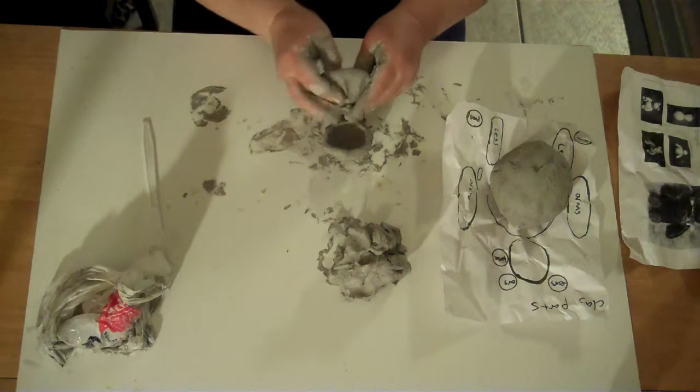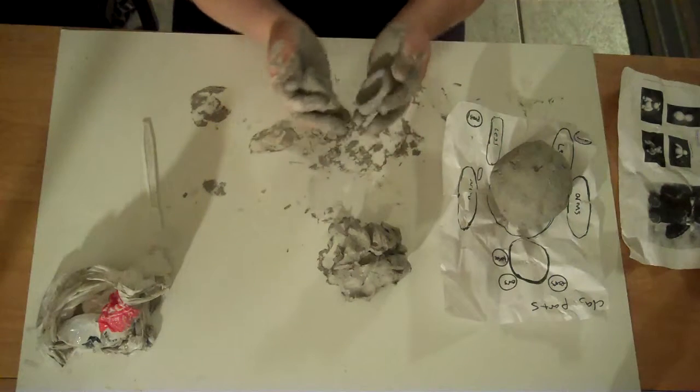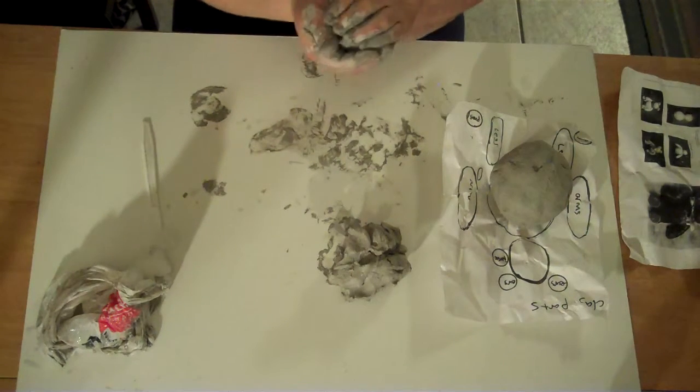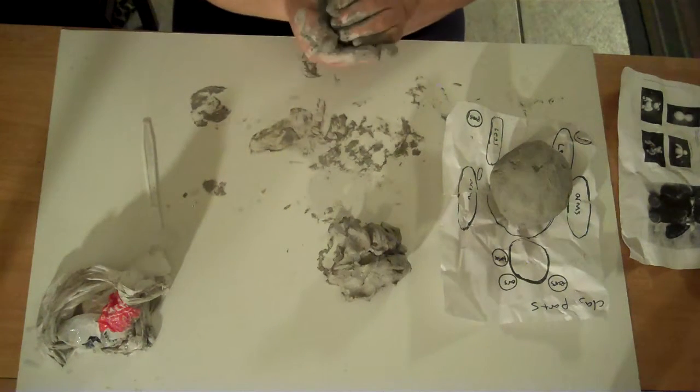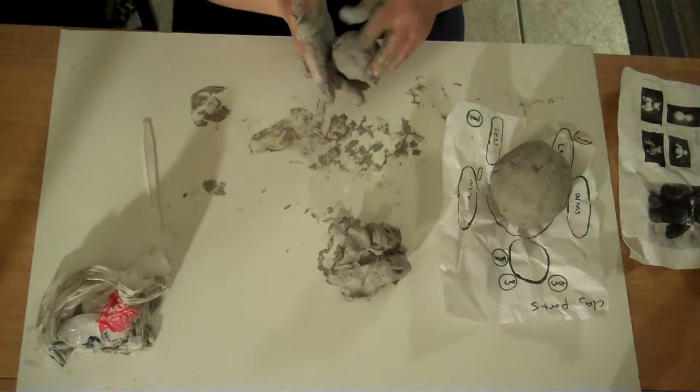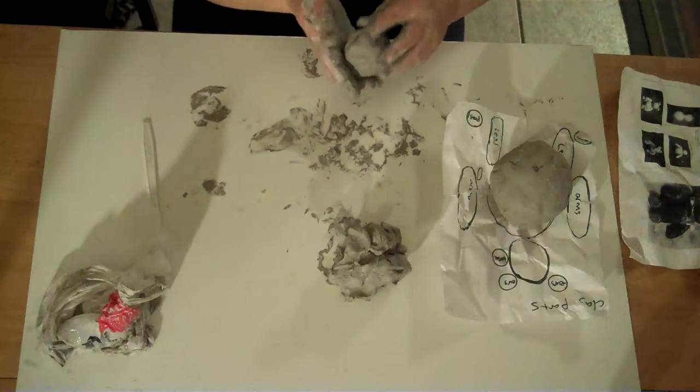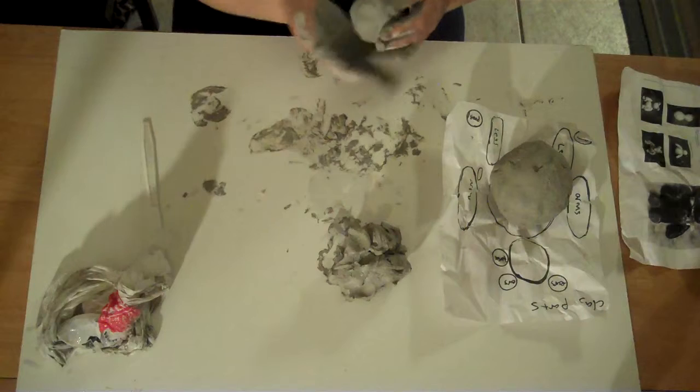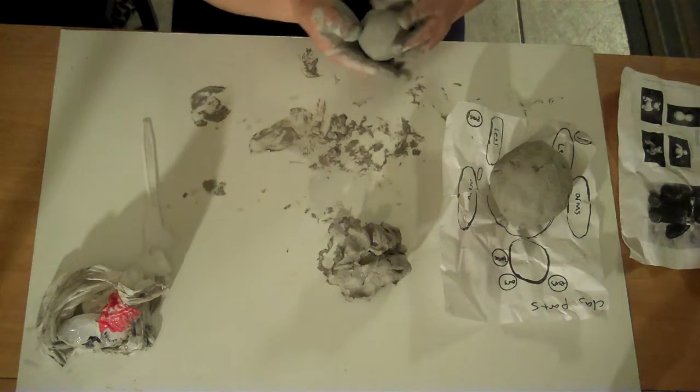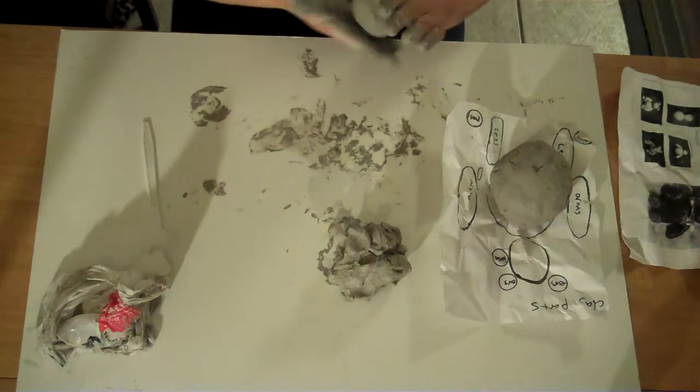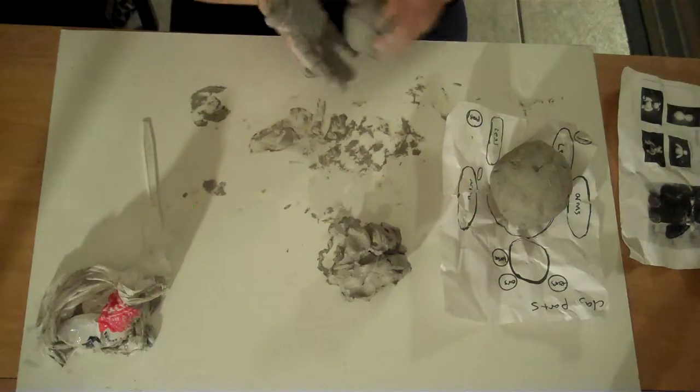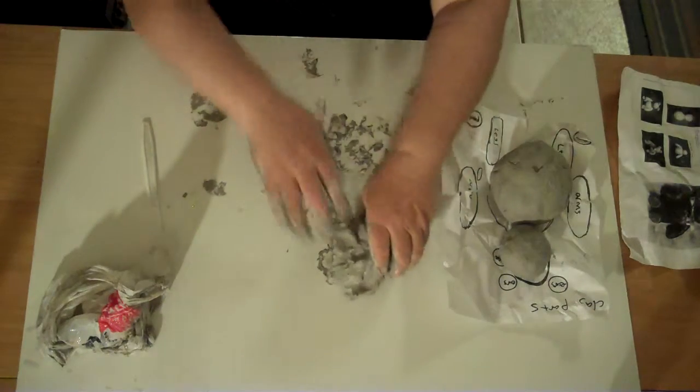Then you're going to make another pinch pot. They're about the same size, and then shape it and join it. Joining is smushing it together. Then you're making it one clay piece and now what you have is really a clay balloon.